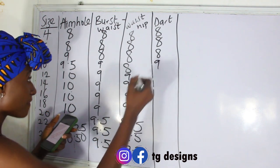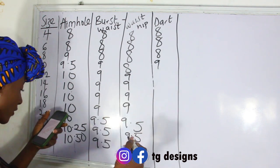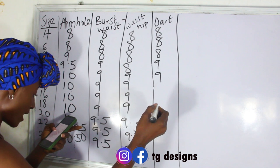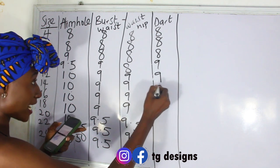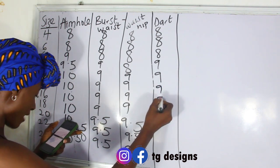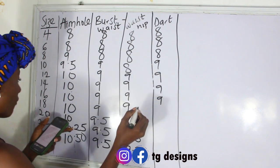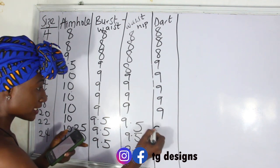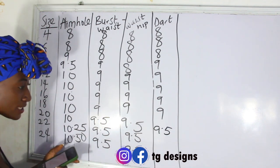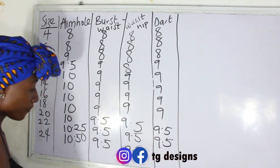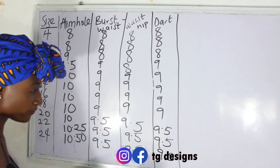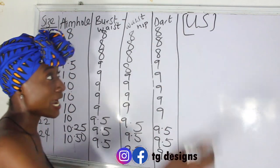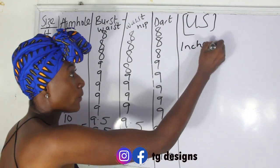Continuing the dart measurements: size 10 — 9 inches; size 12 — 9 inches; size 14 — 9 inches; size 16 — 9 inches; size 18 — 9 inches; size 20 — 9.5 inches; size 22 — 9.5 inches; size 24 — 9.5 inches. These are US sizes and all measurements are in inches.